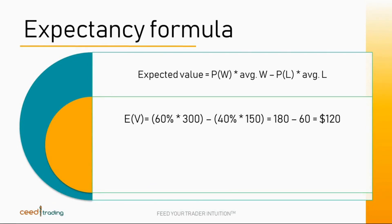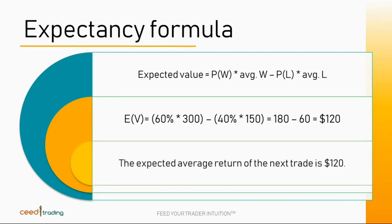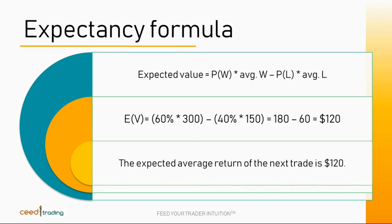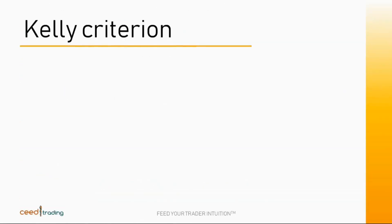Trading this strategy is expected to be profitable and should be traded until proven otherwise. Note that the expectancy does not give us any information about the particular sequence of positive and negative trades in which they occurred. It also doesn't give us any information on optimal position sizing or volatility. What would happen to our account balance if we had a series of 3, 6, or 10 negative trades in a row? We need a way to account for the uncertainty of the sequence of returns so that we can continue to trade our strategy through a period of drawdowns.